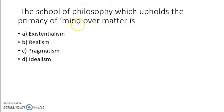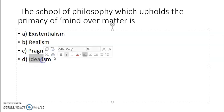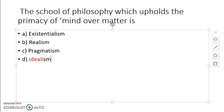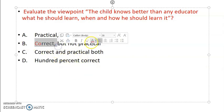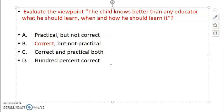The school of philosophy which upholds the primacy of mind over matter - as I just explained, idealism gives more importance to mind rather than matter. Rather than materialistic world, physical world, they give more importance to spiritual world, ideal world, mind - all these. Next question gives a viewpoint: the child knows better than any other educator what he should learn, when and how he should learn it. Evaluate this - practical but not correct, correct but not practical, correct and practical both, or 100% correct? So answer is B, correct but not practical, because practically applying this is very difficult.